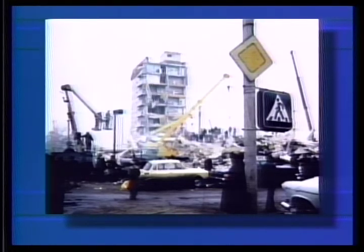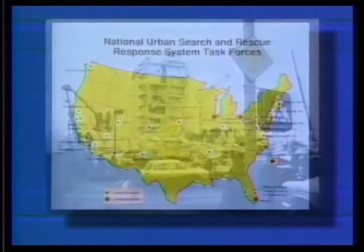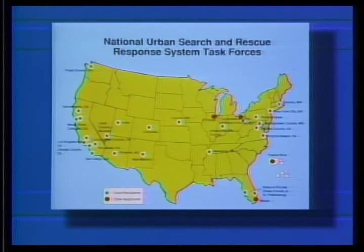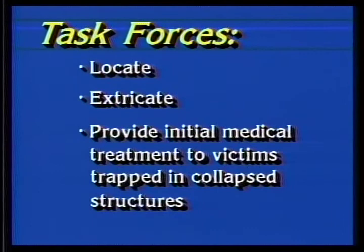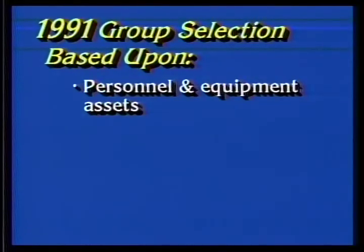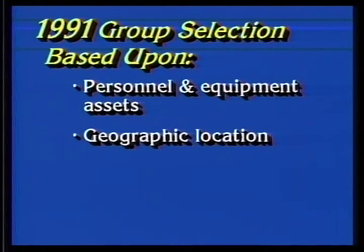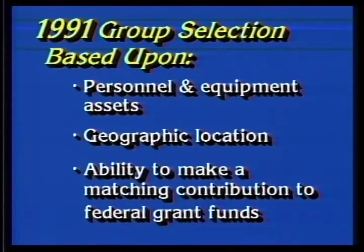There is no federal funding involved to support urban search and rescue operations in non-federal cases. The service delivery component of the National Urban Search and Rescue System are the 25 Urban Search and Rescue Task Forces. These groups locate, extricate, and provide initial medical treatment to victims in collapsed structures. They are trained and equipped to manage the most difficult types of collapsed structure rescues, particularly in multi-story, reinforced concrete building collapses. FEMA provides the criteria and standard operating procedures for task force development, training, and operations.